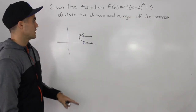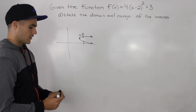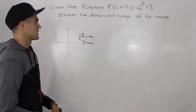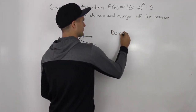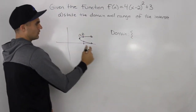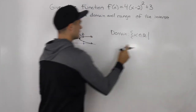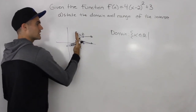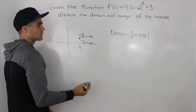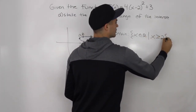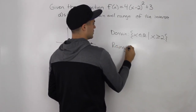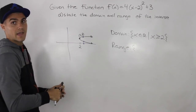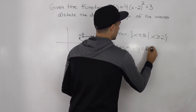Part d: state the domain and range of the inverse. Looking at the sketch, all you need are the coordinates of the vertex. The domain is x ≥ 3, because the vertex x value is at 3 and all x values must be greater than or equal to 3. The range has no restriction — the arrows keep going on forever — so y is an element of real numbers.